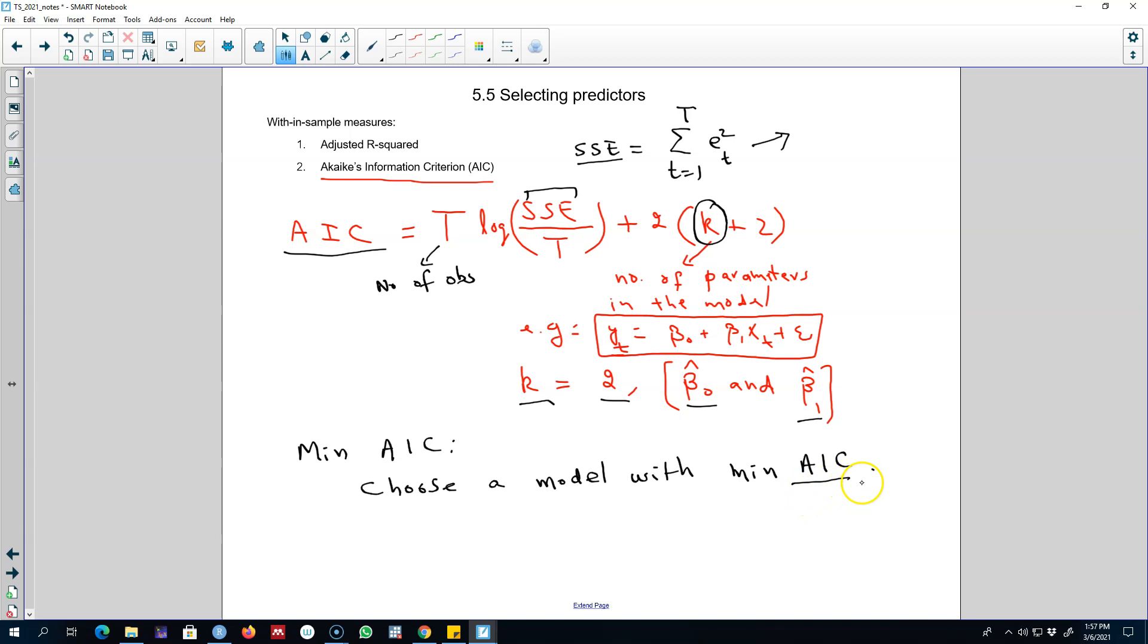Essentially, we will regress various models and then choose the best model with the minimum value of Akaike's Information Criterion. I'll see you in the next video to talk about AIC information criterion corrected.